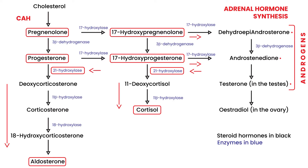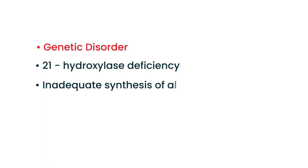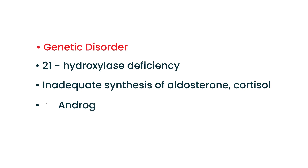It's important to understand this before going forward because this is the key to CAH. Essentially, it is a genetic disorder due to the deficiency of 21-hydroxylase. When this enzyme is deficient, you get inadequate synthesis of aldosterone and cortisol, and because those hormones are not produced, the precursors build up and are shunted in the other direction to produce an excess of androgens.